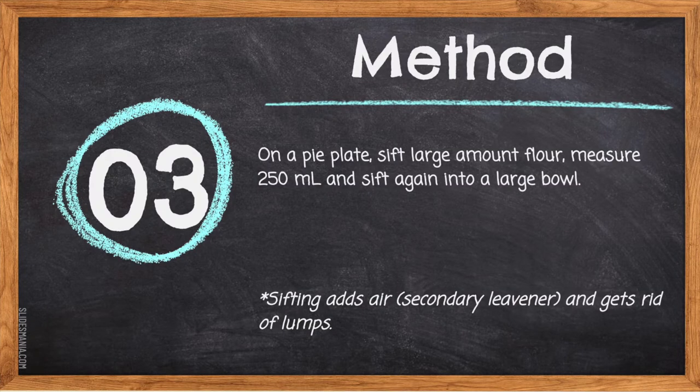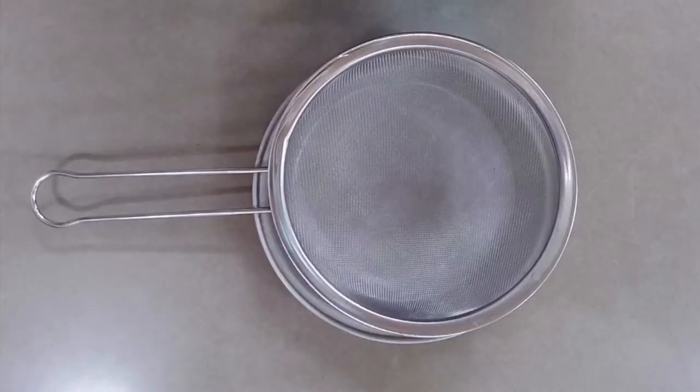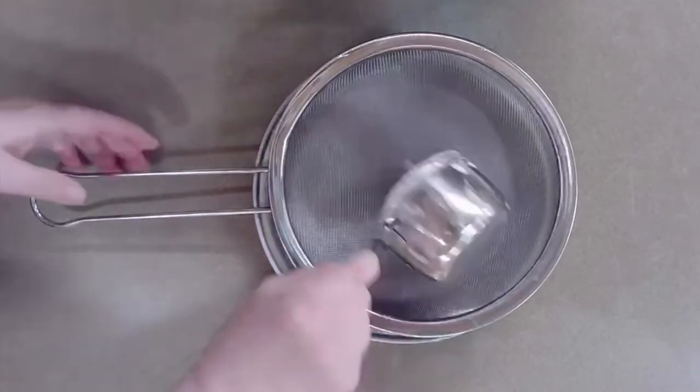Step three: on a pie plate, sift a large amount of flour, measure 250 milliliters, and sift again into a large bowl. Sifting adds air as a secondary leavener and gets rid of lumps. We sift flour for two reasons: first, to remove any lumps, as living near the ocean means we have a lot of moisture in the air which lumps our flour.